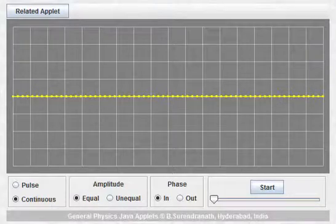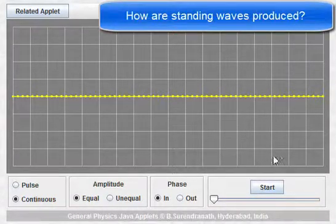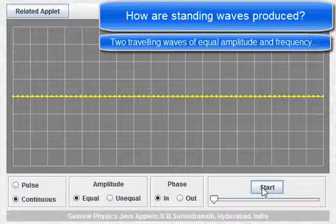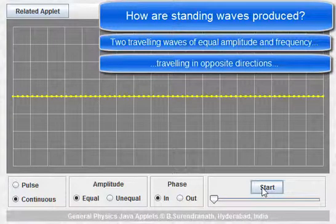The first thing we're going to look at is how a standing wave is produced. We're going to use this Java applet to demonstrate how that happens. In order to form a standing wave, all we need is two waves of equal frequency and amplitude traveling in opposite directions and superposing and interfering.